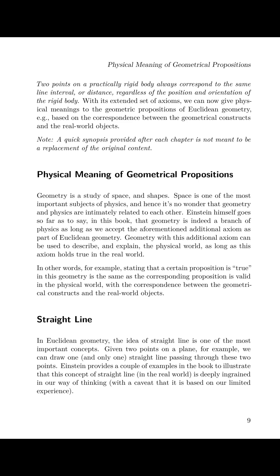Physical Meaning of Geometrical Propositions. Geometry is a study of space and shapes. Space is one of the most important subjects of physics, and hence it's no wonder that geometry and physics are intimately related to each other. Einstein himself goes so far as to say in this book that geometry is indeed a branch of physics as long as we accept the aforementioned additional axiom as part of Euclidean geometry. Geometry with this additional axiom can be used to describe and explain the physical world as long as this axiom holds true in the real world. In other words, for example, stating that a certain proposition is true in this geometry is the same as the corresponding proposition is valid in the physical world with the correspondence between the geometrical constructs and the real world objects.